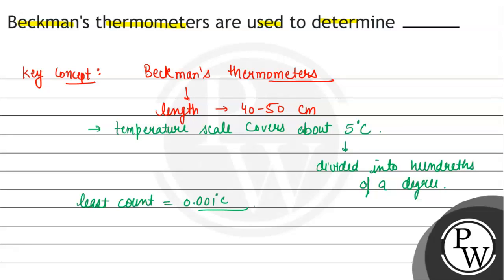What do Beckman's thermometers measure? Temperature - specifically the small changes in temperature. We measure small changes or differences of temperature.